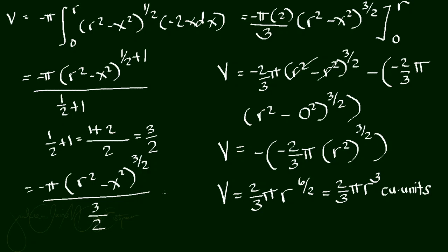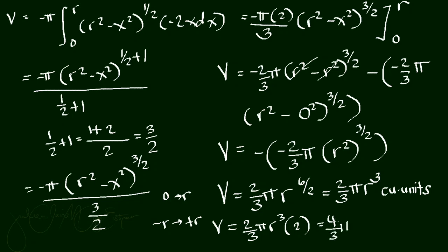That result is from 0 to r, covering only half the sphere. To get the full volume from negative r to positive r, we multiply by 2: v equals 2/3 pi r cubed times 2, which gives us 4/3 pi r cubed cubic units. That is the volume of a sphere.